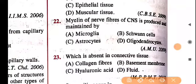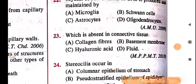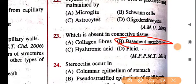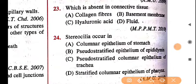Question 22: myelin on nerve fibers of the CNS is produced and maintained by oligodendrocytes — note this down. Question 23: which is absent in connective tissue? Basement membrane is absent in connective tissue — basement membrane is a characteristic of epithelial tissue, not connective tissue. Stereocilia occurs in pseudo-stratified columnar epithelium of the trachea.